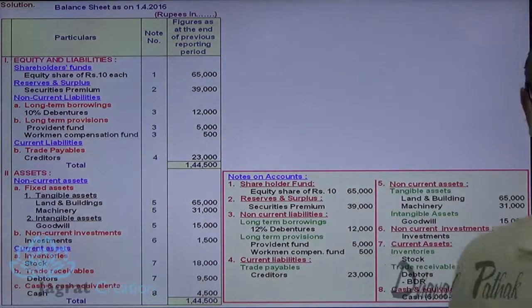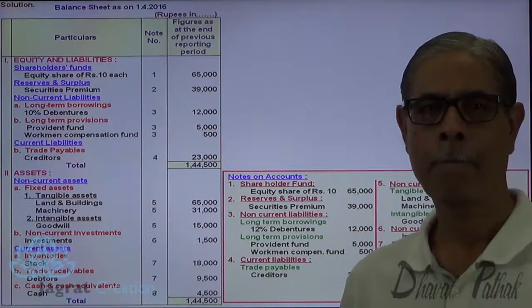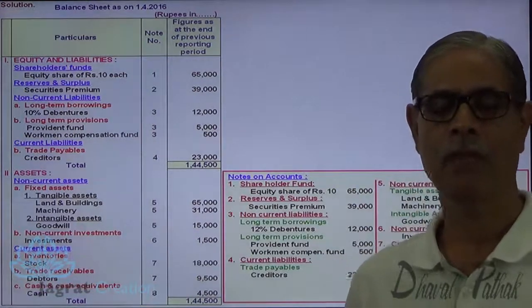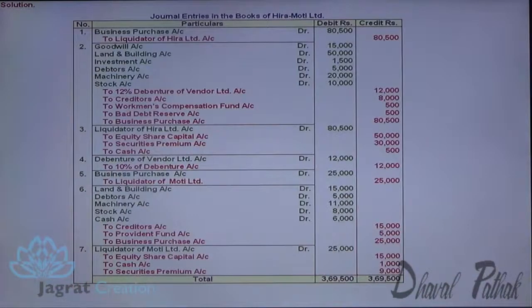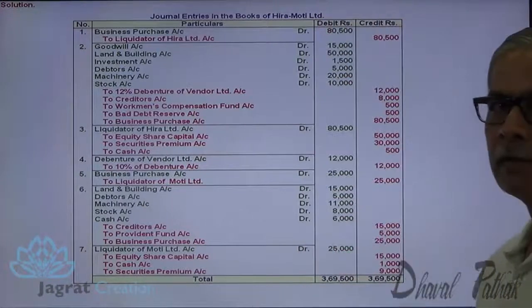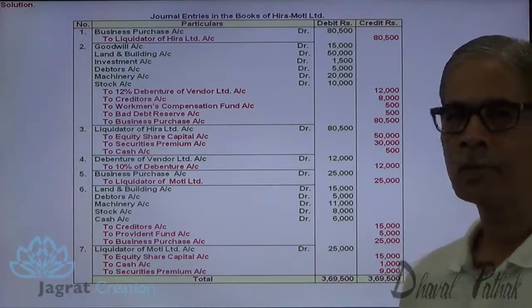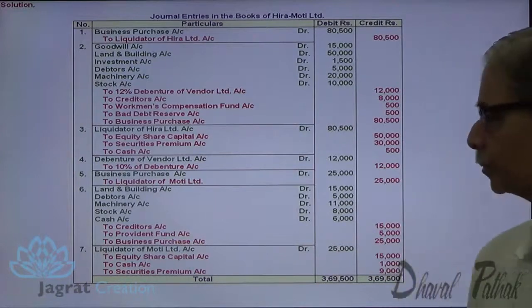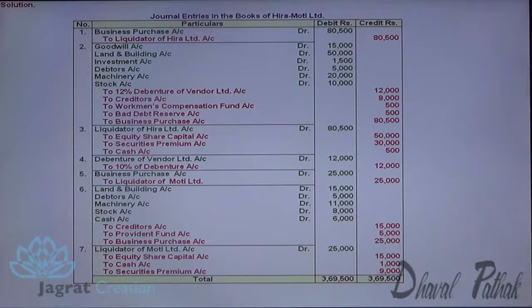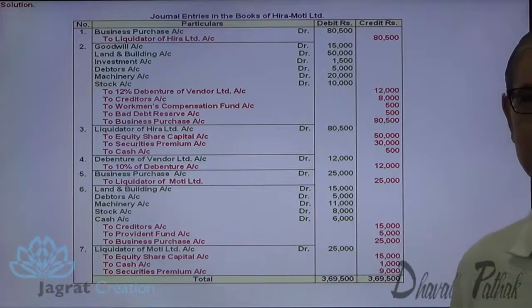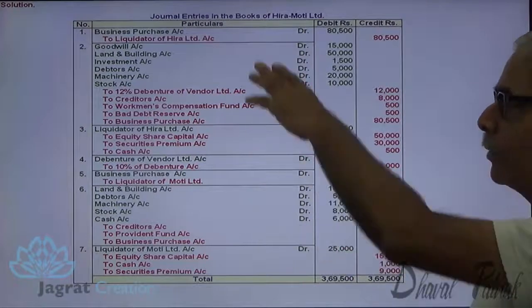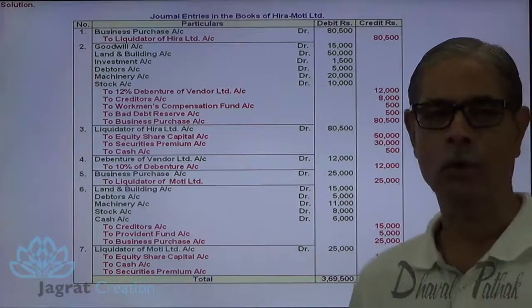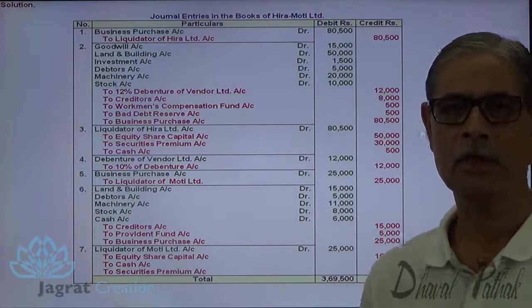This is how the sum on amalgamation gets solved. I have tried to explain this sum and I feel you have followed. The journal entries are recorded by solving the sum — narration you can write on your own. Thanks to all of you.